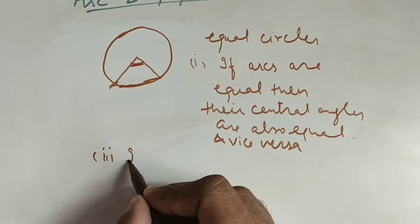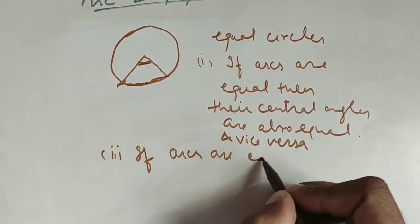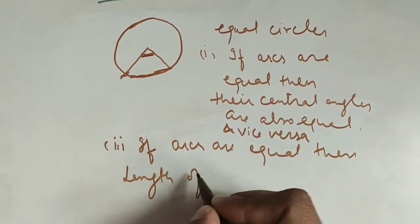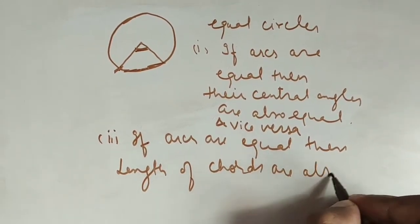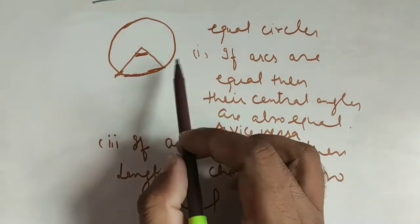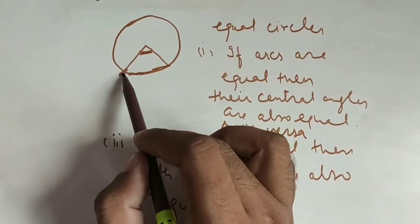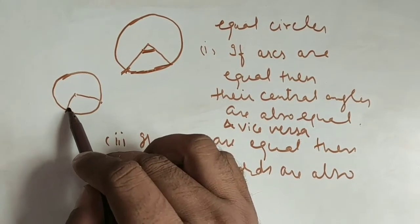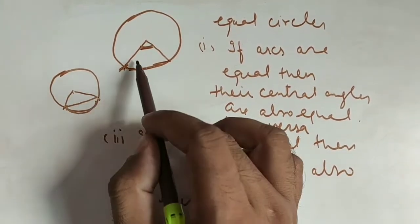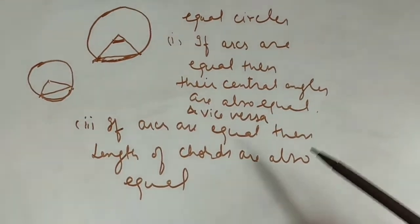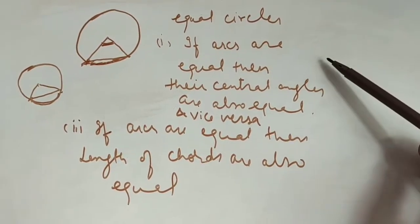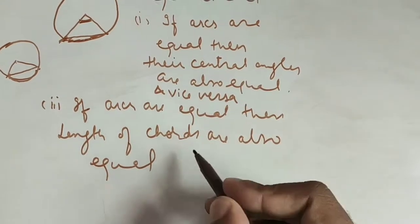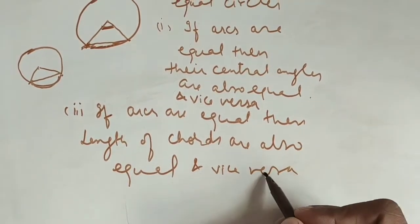The second point is: if arcs are equal, then the length of chords are also equal. It means if we have two equal circles and the lengths of the arcs are equal, then this chord will be equal to that chord. So arcs are equal implies central angles are equal, and if arcs are equal then length of chords are equal, and if length of chords are equal then arcs are equal.